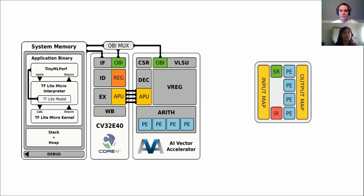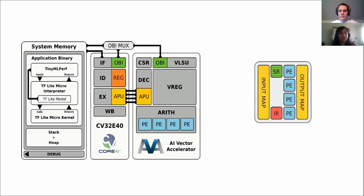This interface is used by the optional floating point unit, and since that unit is not used in this design, the interface is used by our accelerator instead. Several minor modifications were also required for the core RTL in order to support the architecture of the accelerator, especially with regards to multi-cycle instructions. Operations on the vector elements are carried out in the arithmetic execution logic of the accelerator, and its design uses a SIMD architecture where the same operation is applied simultaneously to multiple data elements using four separate processing elements.